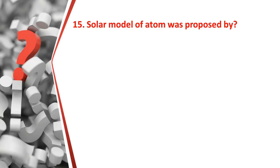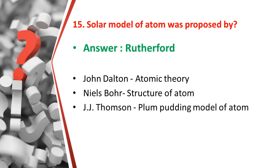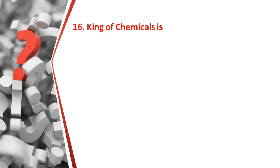The fifteenth question: the solar model of the atom was proposed by whom? The answer is Rutherford. Related facts: John Dalton proposed atomic theory, Niels Bohr proposed the structure of the atom, and J.J. Thomson proposed the plum pudding model of the atom. So the solar model was proposed by Rutherford.